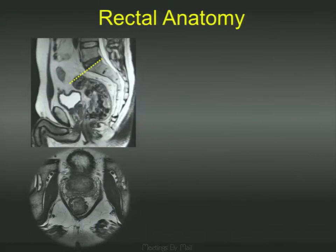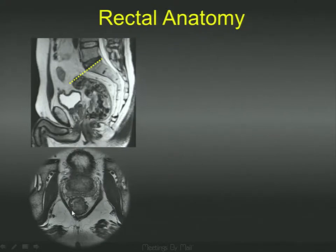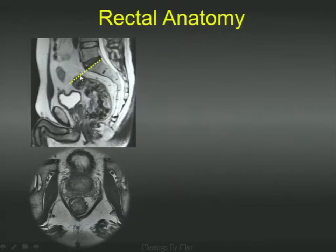Before we dwell on the staging aspect of things, it's important to emphasize the anatomy. When one looks at the MR anatomy of the rectum, the lower extent is fairly clear — it's the level of the puborectalis muscle, as you see on this T2-weighted image, which forms the junction between the anal canal and the rectum at the lower end. It's the superior aspect which is the challenge. Typically, if you drop a perpendicular from the top of S1 down, the bowel below that is the rectum.